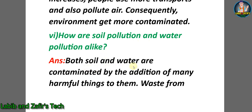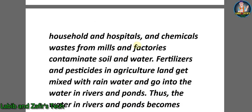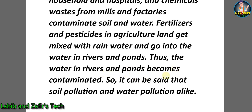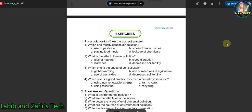Sixth descriptive question: how are soil pollution and water pollution alike? Answer: both soil and water are contaminated by the addition of many harmful things. Waste from households, hospitals, and chemicals from mills and factories contaminate both soil and water. Fertilizers and pesticides from agricultural land get mixed with rainwater and flow into rivers and ponds, making that water contaminated. Thus, it can be said that soil pollution and water pollution are alike. That's all for today — hope you liked this video.